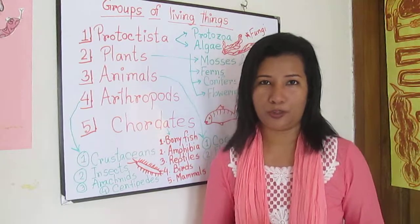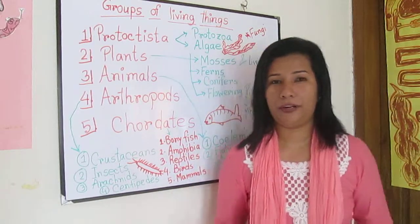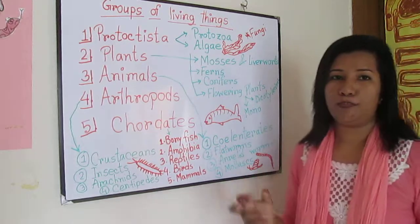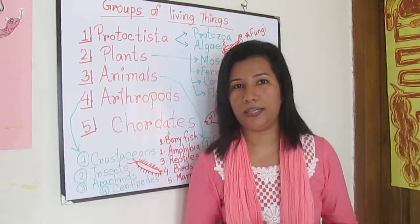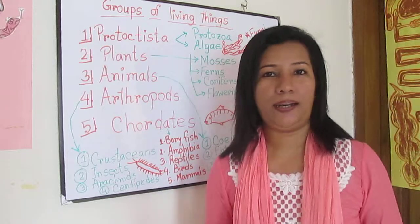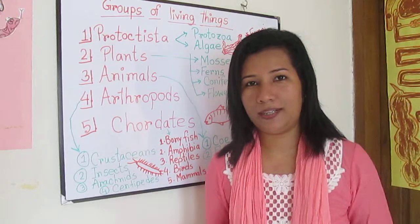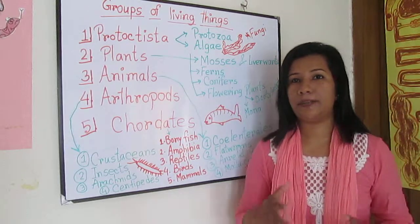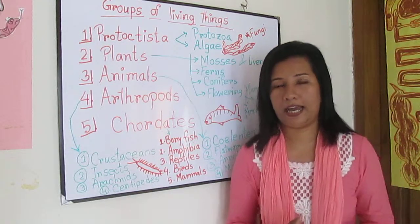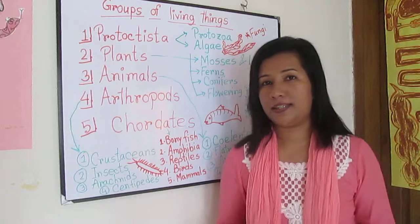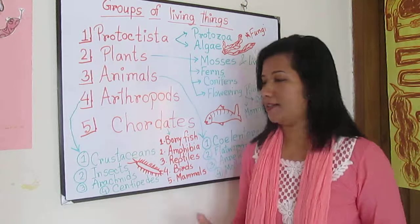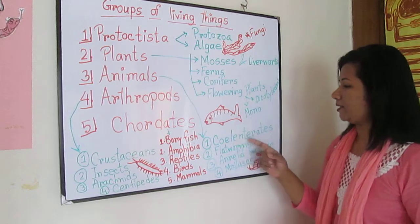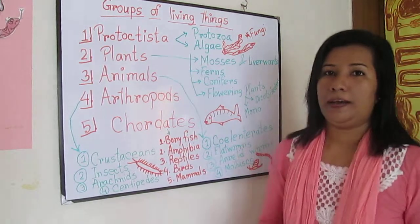Flowering plants have two groups: monocotyledons and dicotyledons. Monocotyledons have leaves with parallel veins, while dicotyledons have leaves with a network of veins. In the animals kingdom, coelenterates have a sac-like body with tentacles.